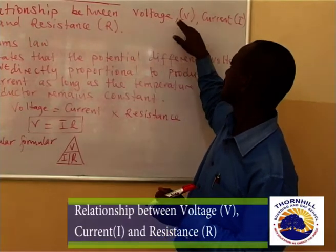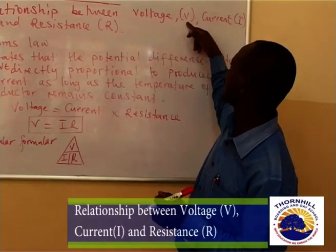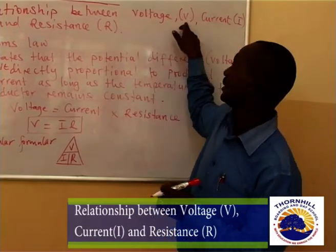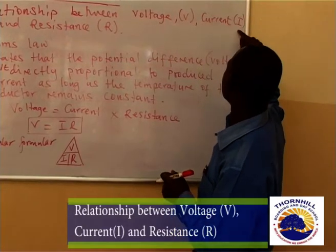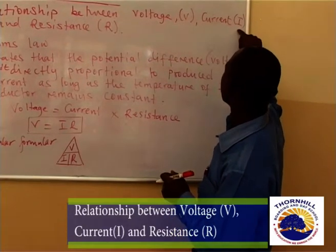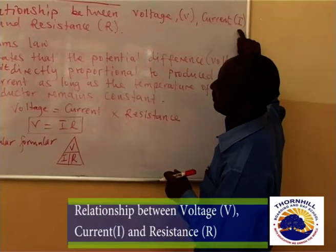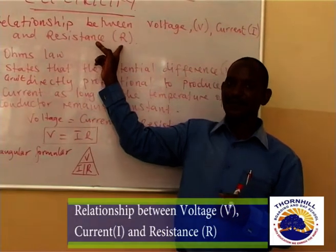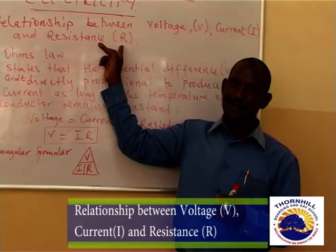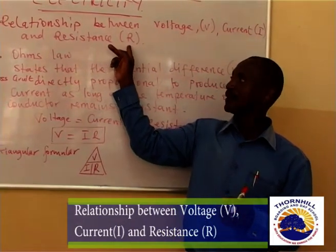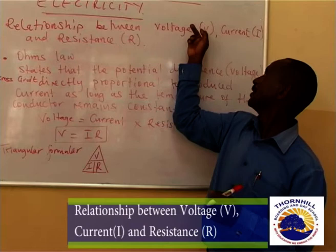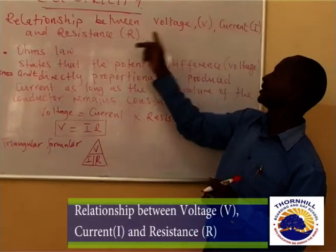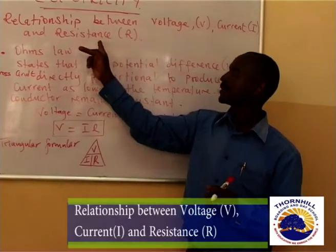Voltage, as you can see, is symbolized by capital V. Current is symbolized by capital I. Resistance is symbolized by capital R. Meaning that V is voltage, I is current, R is resistance.